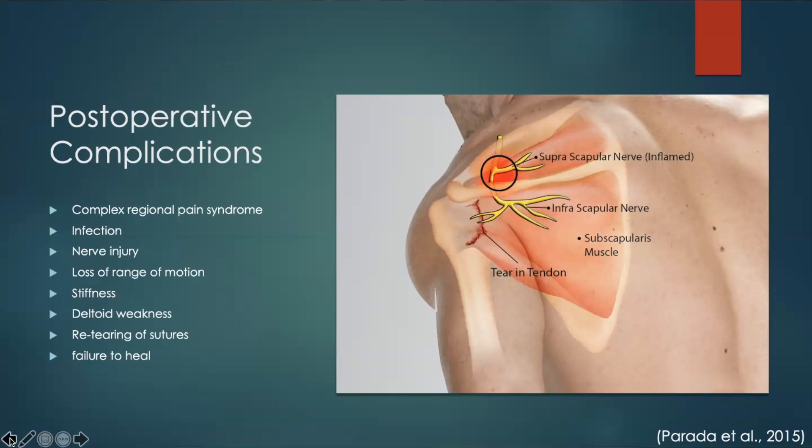Some of the post-operative complications to keep in mind after a rotator cuff repair include complex regional pain syndrome, infection, nerve injuries, loss of range of motion, stiffness, deltoid weakness, re-tearing of sutures, or failure to heal after surgery.